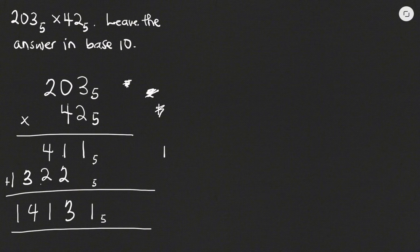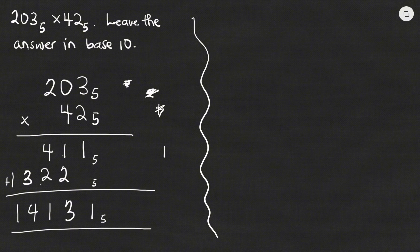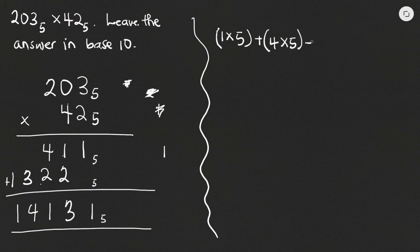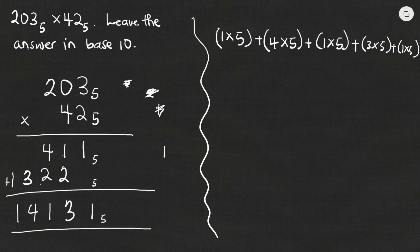The question says to leave our answer in base 10, so we convert 14131 base 5 to base 10. We multiply each digit by the base raised to a power, numbering the powers from right to left starting at 0. So we have: 1 × 5⁴, plus 4 × 5³, plus 1 × 5², plus 3 × 5¹, plus 1 × 5⁰.